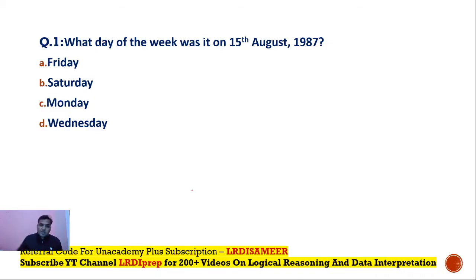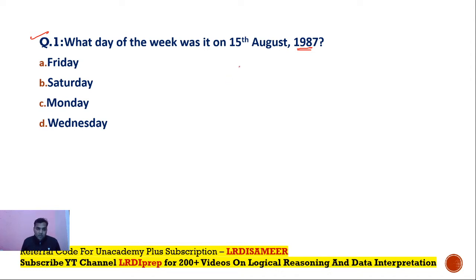Let's start with the basic concept. If you come across a question like: what day of the week was it on the 15th of August 1987? Before you solve this, there are some points that everybody should know. The key theoretical concept related to the calendar is the concept of the number of odd days. Keep some important theoretical concepts in your mind.